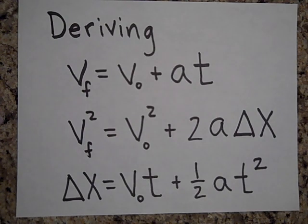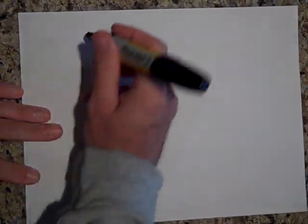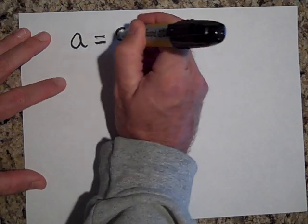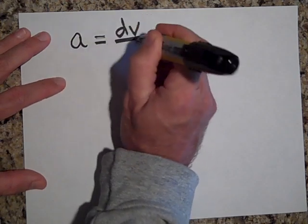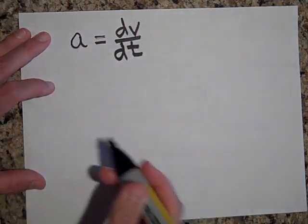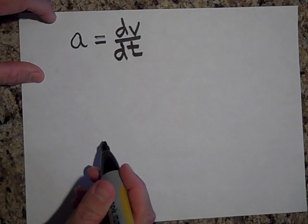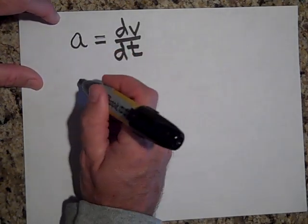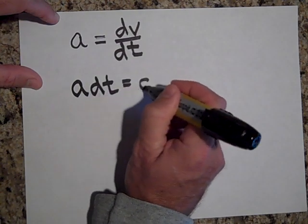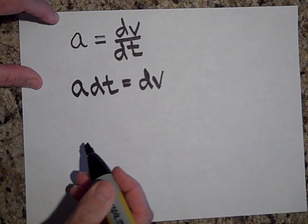We're going to use some calculus to derive three kinematics equations. Let's start with the basic definition: acceleration equals dv/dt. These equations only work when acceleration is constant. I'm going to bring the dt over to the other side, so a·dt equals dv.